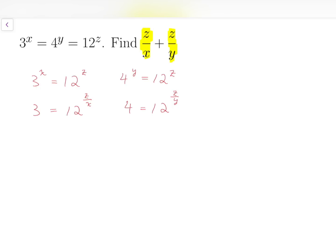adding the indices means to multiply the numbers, so we multiply both equations. 3 times 4 equals 12, which equals 12 to the power of z over x plus z over y. And comparing the indices, we know our final answer should be 1.